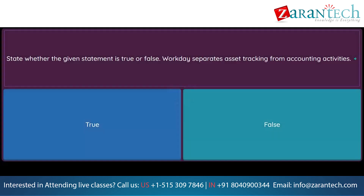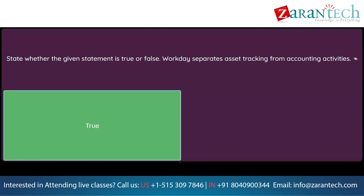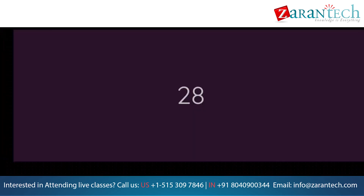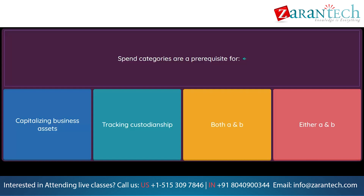Question: State whether the given statement is true or false. Workday separates asset tracking from accounting activities. Option 1: true. Option 2: false. Question: Spend categories are a prerequisite for. Option 1: capitalizing business assets. Option 2: tracking custodianship. Option 3: both A and B. Option 4: either A and B.